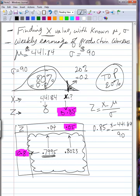So, to solve for x, we must cross multiply. We know that this numerator here, x minus 441.84, times this denominator here, must equal this numerator times this denominator written across it.